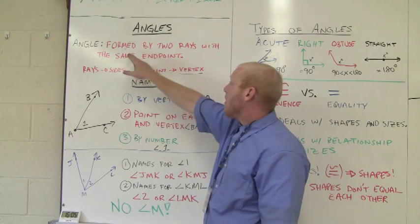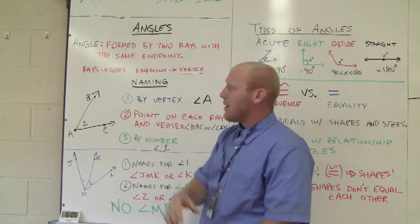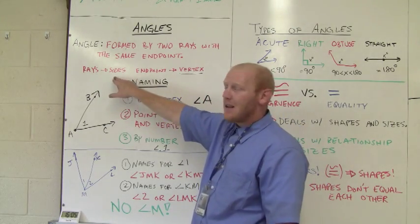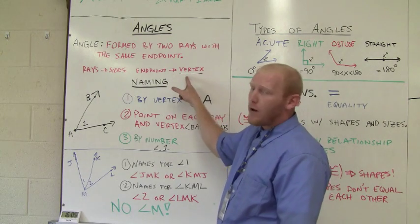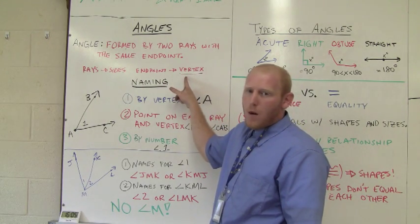Now what is an angle? Well, it's formed by two rays with the same endpoint. That's what it is. The rays are the sides and the endpoint is called its vertex. Maybe you've heard of that before. That's its vertex.